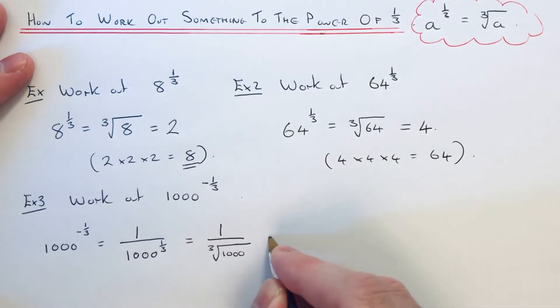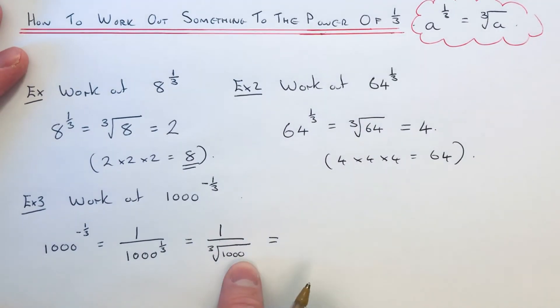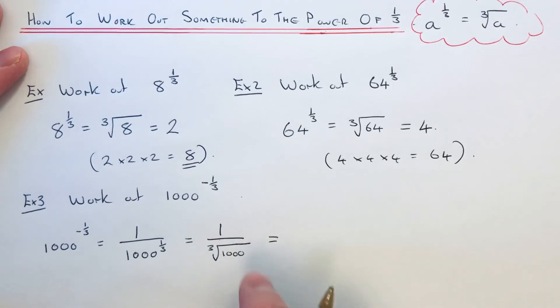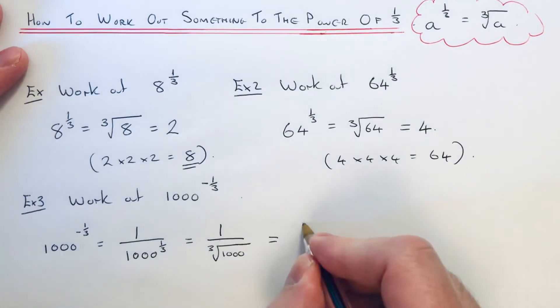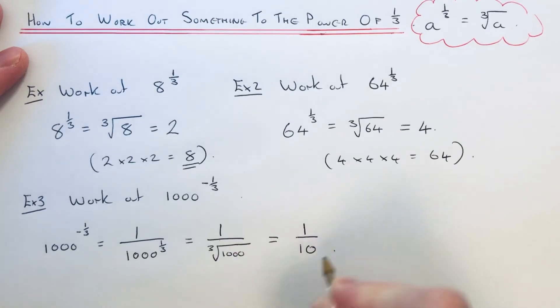Keep the one on top as well, so don't lose that. So the cube root of 1000 is 10, because 10 cubed is 1000. So we get an answer of 1 tenth.